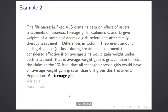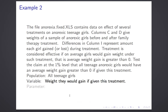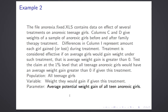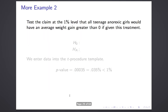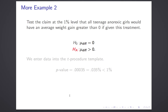Our population is all anorexic teenage girls. Our variable is the weight they would gain if given this treatment — we're predicting what would happen if given this treatment. We're viewing the girls we have data for as a sample of all possible girls, and the parameter is the average potential weight gain of all teen anorexic girls. The null hypothesis is that mu is equal to zero — this is the average of the difference. Our alternate hypothesis is that it's greater than zero. We enter the data into the t-procedure template.